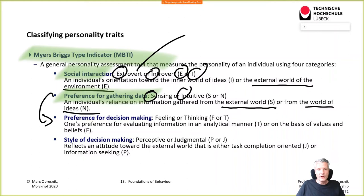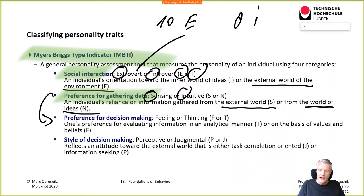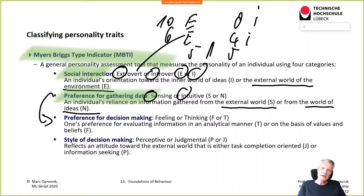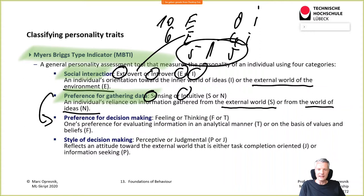However, it gives us certain indications. When you do the test, you can get a maximum score of 10. Some people score 10 on E and zero on I, but others may score six on E and four on I, or even five and five. This doesn't mean you need to see a psychiatrist — it simply means that situation-based, you have different preferences and are not very clearly defined on one aspect. The third dimension is the preference for decision making.